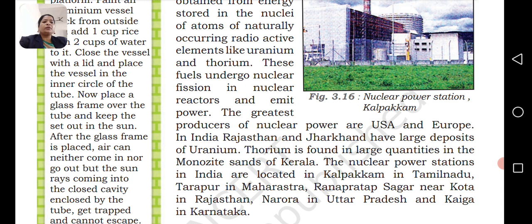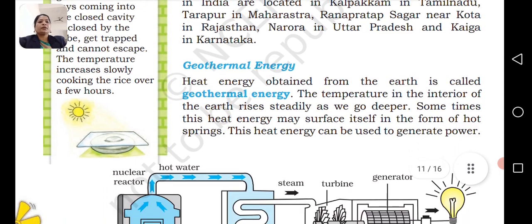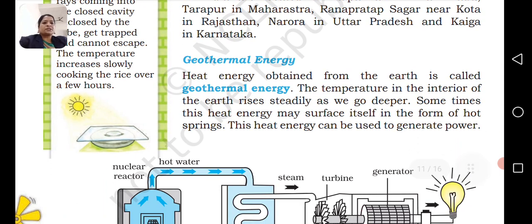The nuclear power stations in India are located in Kalpakkam in Tamil Nadu, Rawatbhata and Tarapur, Rana Pratap Sagar in Kota, Rajasthan, Narora in Uttar Pradesh, and Karnataka.